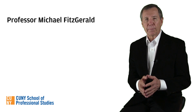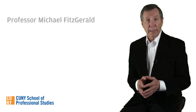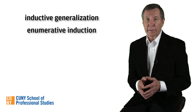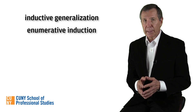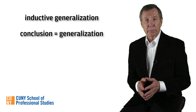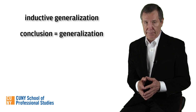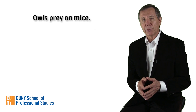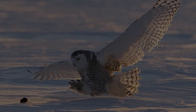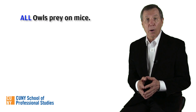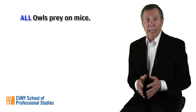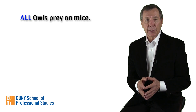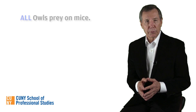Let's get started with our first type of inductive inference, namely inductive generalization, also known as enumerative induction. In an inductive generalization, not surprisingly, we conclude with a generality. Consider this statement: owls prey on mice. We understand that there is a tacit quantifier in this statement, namely 'all' — it's saying that all owls prey on mice. In an inductive generalization, a statement such as this would function as the conclusion.